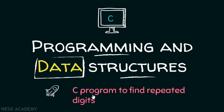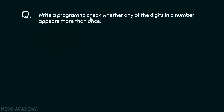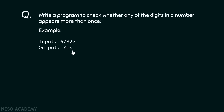In this lecture we will try to understand how we can write a program to find repeated digits in a number. Write a program to check whether any of the digits in a number appears more than once. For example, suppose the user inputs the number 67827. We need to identify whether any of the digits in this number appears more than once. As we can clearly see, 7 appears more than once, therefore the output must be yes. I encourage you to pause the video and try to write this program yourself.